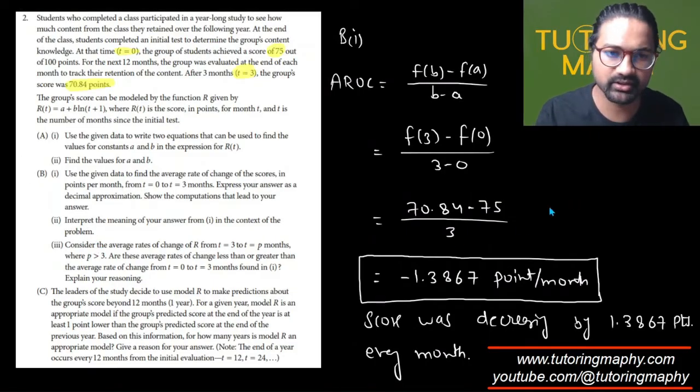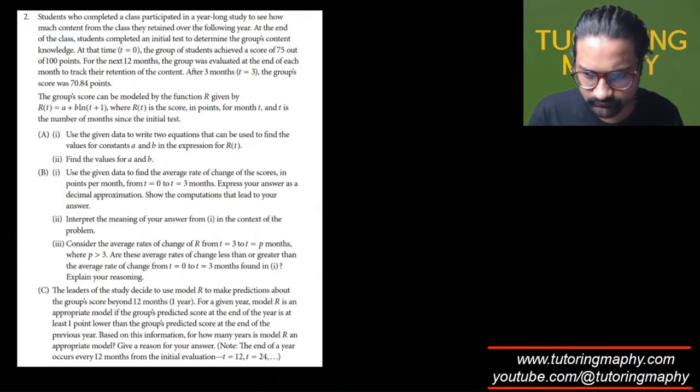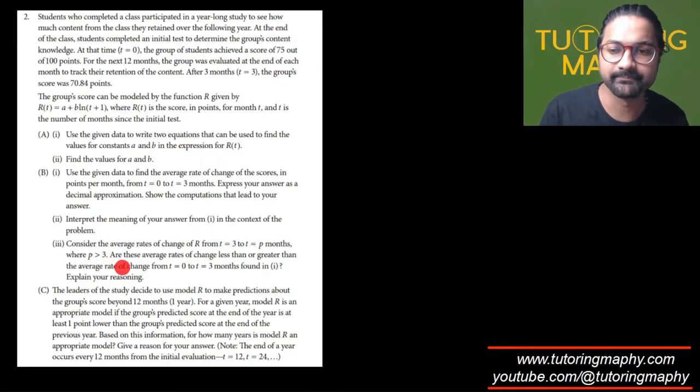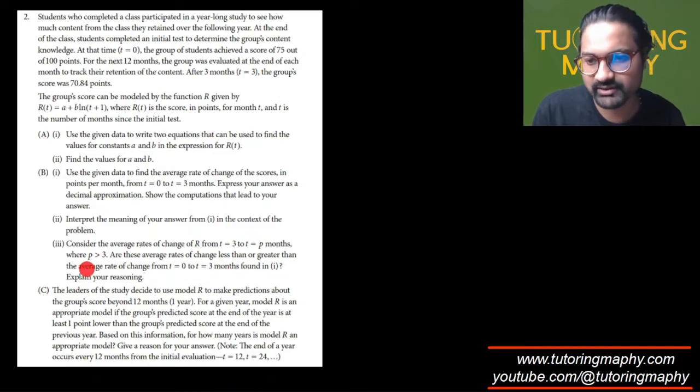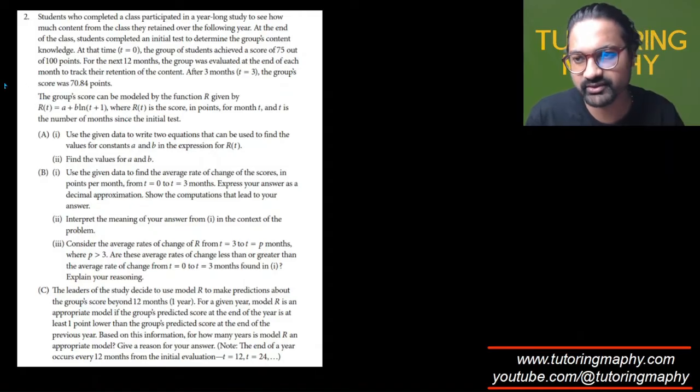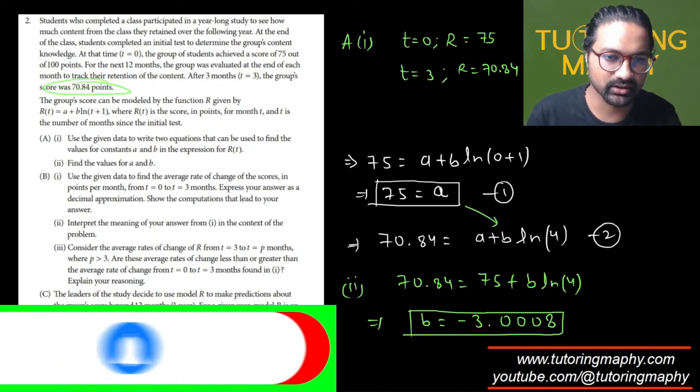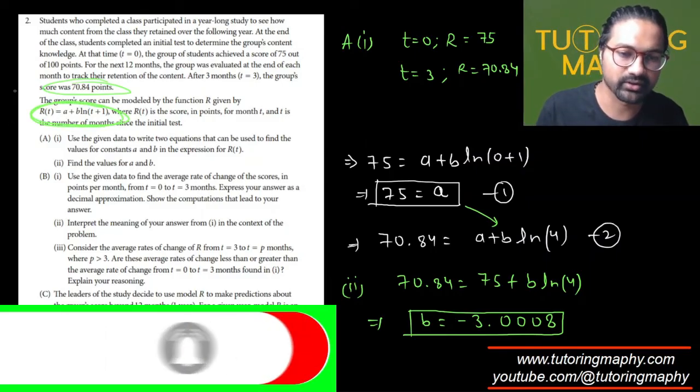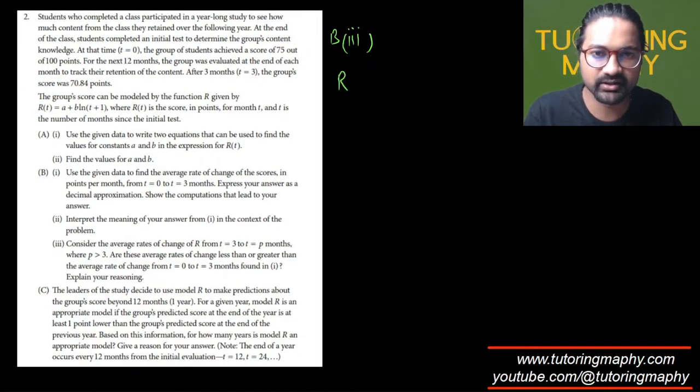Let's work on part 3 now. This one says consider the average rates of change of R from 3 to some value P, where P is greater than 3. Are these average rates of change greater than or less than the average rate of change from 0 to 3 found in part 1? Then explain your reasoning. This is all about the graphical understanding of how the function is going to look. Remember the values of a and b which we got? If we plug a and b into this, we are going to get R is equal to 75 minus 3.008 natural log of t plus 1.